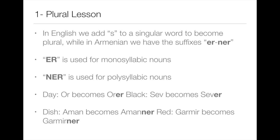For example, a monosyllabic word: 'is' (or 'it') becomes 'iser', and 'black' becomes 'severe'. For polysyllabic words: 'dish' meaning man becomes 'dishner', and 'garme' becomes 'garmener'.